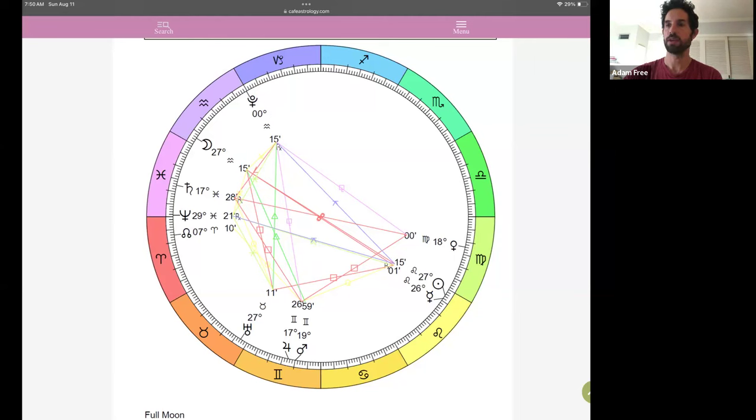So the first thing that happens here is the Sun in Leo and the Moon is in Aquarius. The Sun and the Moon are always opposite during this full moon period.